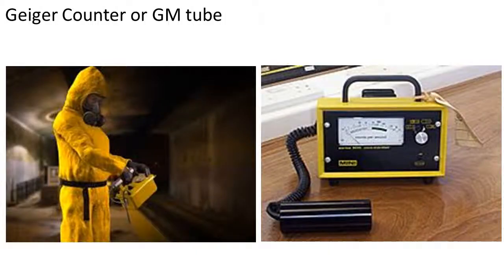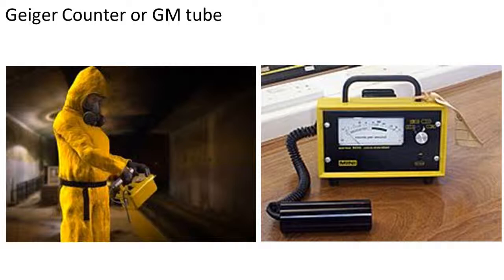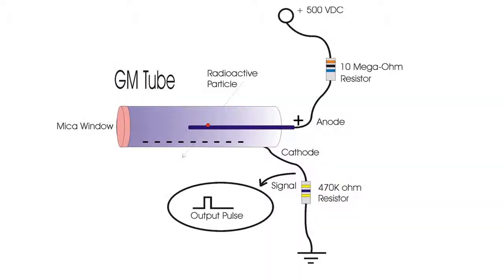You can detect radiation, these sort of what we call radiation events, using something called a GM tube or a Geiger-Müller tube. In the movies, you often hear it referred to as a Geiger counter. And the way a Geiger counter works is it's this tube with a positively charged anode going through the middle. And the outside is negatively charged. The casing is negatively charged. And it's got some sort of helium or argon or neon or some inert gas inside.